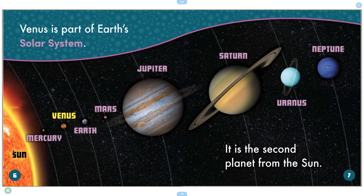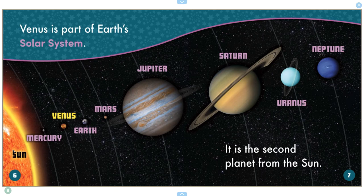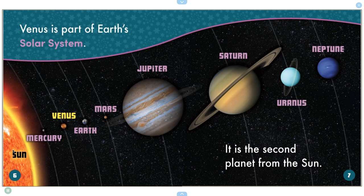Venus is part of Earth's solar system. Sun, Mercury, Venus, Earth, Mars, Jupiter. It is the second planet from the Sun. Saturn, Uranus, Neptune.